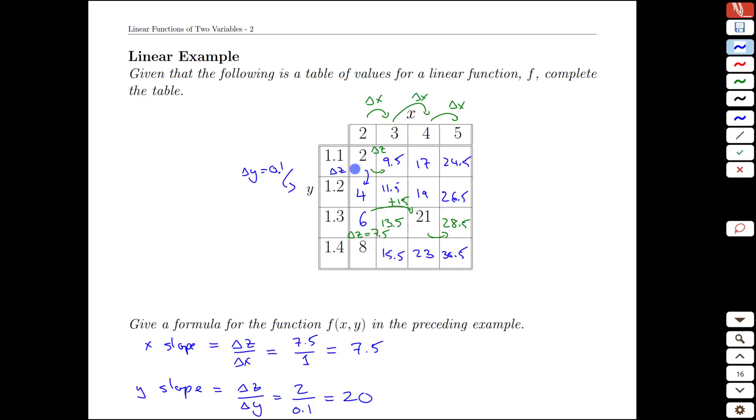So these are reasonable values given the change in z for the change in x or y respectively. Once we have this then we can build our formula. What we are going to do is put a minor variation on the formula we saw on the last page and we're going to model it on our point slope formula from single variable functions.